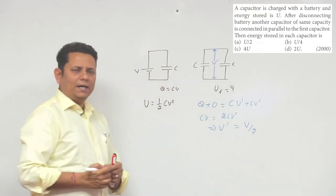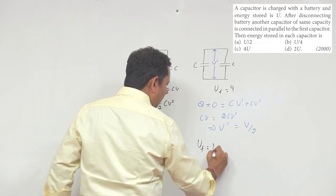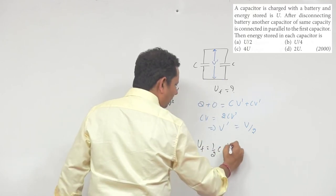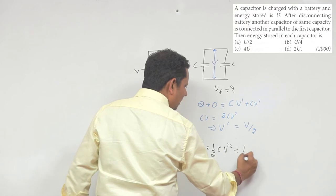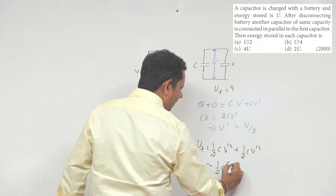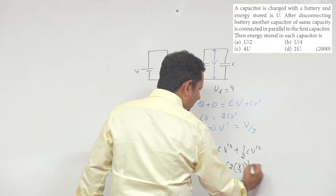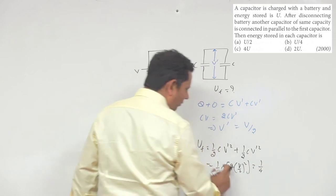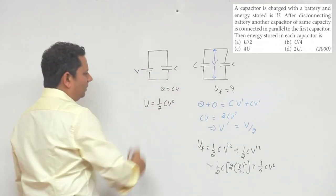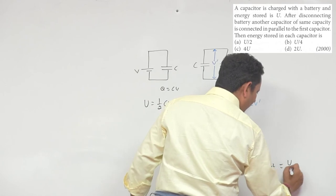Here, if we write the energy in this case, energy final will be equal to half C multiplied by V' square plus half C multiplied by V' square. This can be written as half C common, inside becomes twice V' by 2 square. So this becomes 1/4 - the 2s cancel - 1/4 CV square. Now here we called half CV² as U, so this will be equal to U/2. So the energy will be U/2.